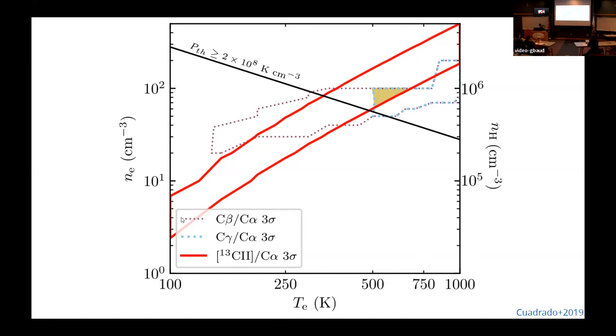And here, for example, we're showing the constraints. If you look at 13C+ and over the carbon alpha emission, you get these red lines. And then if you look at higher order transitions of the carbon recombination lines, carbon beta and carbon gamma, you get these other constraints. And then when you combine all of these things,